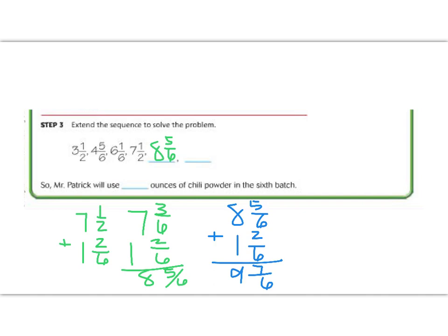And this gets us our last term, but unfortunately this term is in an improper fraction because 7 is bigger than 6. So we need to change this. 6 goes into 7 one time, so that means I have one more whole number. So that means I'm going to have 10 1/6. So he's going to use 10 1/6 ounces of chili powder for his 6th batch.